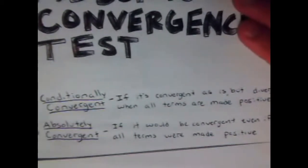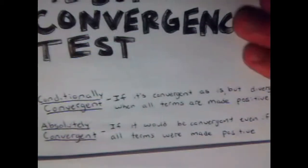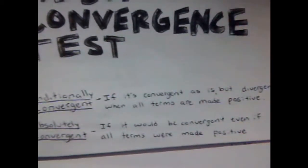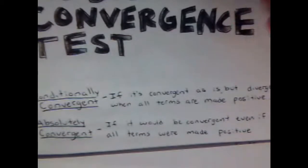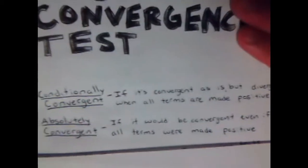The second outcome is Absolutely Convergent, which means that it will also be convergent when you make all the terms positive. And if your series is absolutely convergent, it will also automatically be Conditionally Convergent.